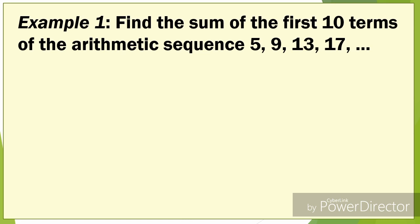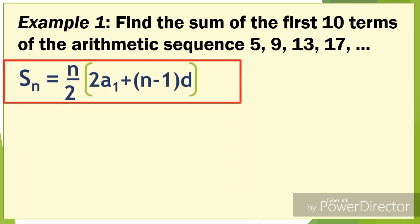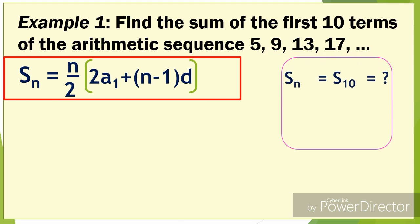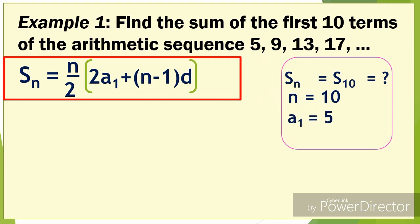Example number 1: Find the sum of the first 10 terms of the arithmetic sequence 5, 9, 13, 17. We're going to use this formula. The first step is to determine the following: S of n is S of 10 because we're finding the sum of the first 10 terms. Therefore, n is 10, a sub 1 is 5, and the common difference is 4.